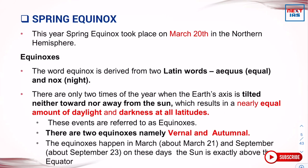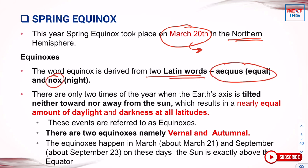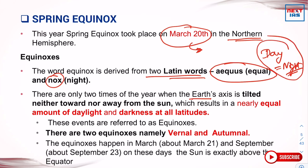This year the Spring Equinox took place on March 20th in the Northern Hemisphere. The word equinox is derived from two Latin words — aequus and nox — meaning equal night. So equinox means when the length of day is equal to the length of night. There are only two times of the year when this happens.